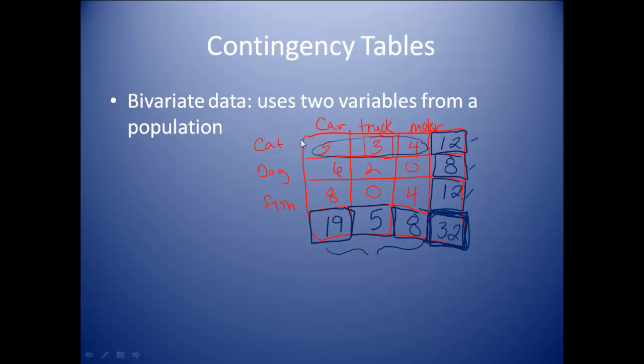So this right here is what's called a contingency table. It takes bivariate data and it displays it in a table. Now, what we can do is we can change all of these into probabilities. And when we do that, we actually change our contingency table into a joint and marginal probability table.